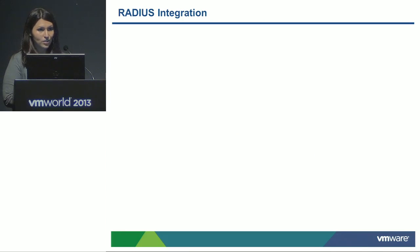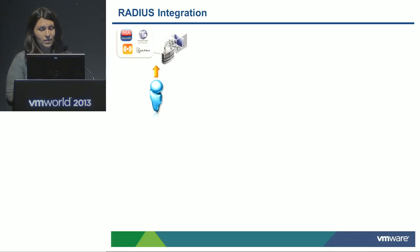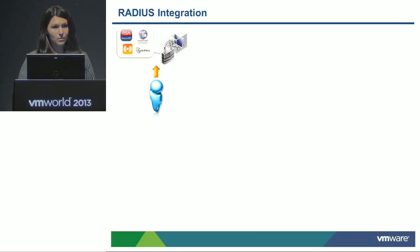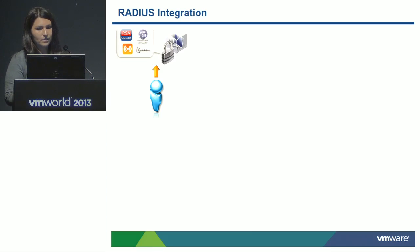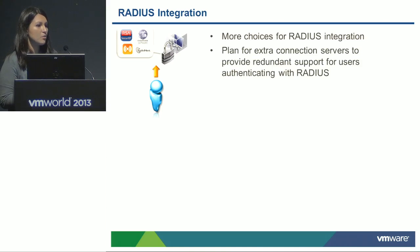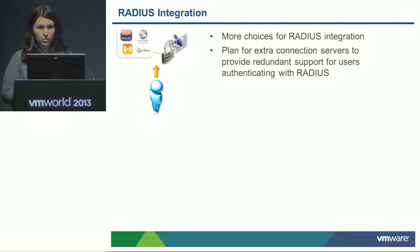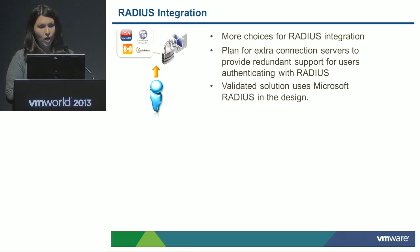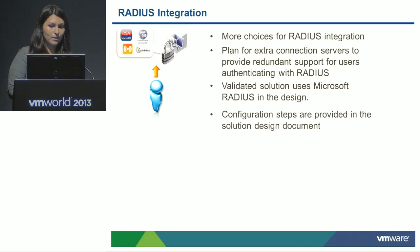Let's talk about RADIUS integration with the product. You have a lot of great choice and flexibility with different RADIUS partners — RSA SecureID, Active Identity, Symantec, SafeNet, McAfee, and others. Our design guide includes instructions on how to connect with View, with tips and tricks, and it's meant to be modular so you can fit in any choice you need. In our particular solution, we set up Microsoft RADIUS, and there are detailed instructions fully documented on how to set that up with View.